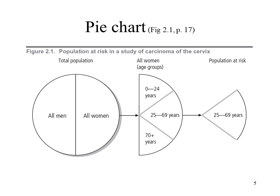This is an example of a pie chart. You start with the total population — half males and half females. Then you take all the females and divide them up into different age groups: up to 24 years, 25 to 69 years, and 70 plus years. From there, you take the piece of the pie that represents the population at risk when looking at cancer of the cervix. Note that for a pie chart, the percentages have to add up to 100%. Have a think about what type of data you can graph with a pie chart.